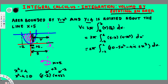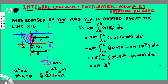Writing in descending order, the integrand becomes x³ minus 5x² minus 4x plus 20. Now we integrate: this gives x⁴/4 minus 5x³/3 minus 4x²/2 plus 20x, evaluated from negative 2 to positive 2.